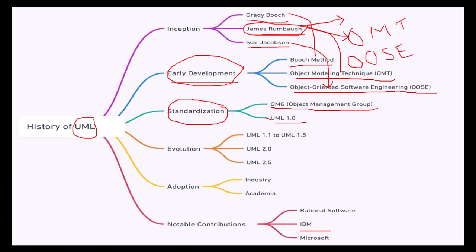IBM, Microsoft, and Rational Software contributed a lot to UML. The versions evolved from 1.1 to 1.5, then 2 and 2.5. Adoption started across industry and academia.